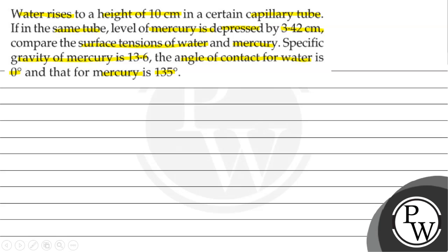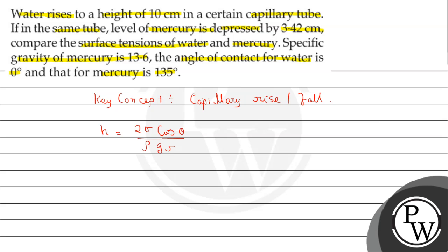We will compare the surface tension of water and mercury. The key concept we are using here is capillary rise or fall, which is given by the formula: h equals 2 sigma cos theta divided by rho g r.